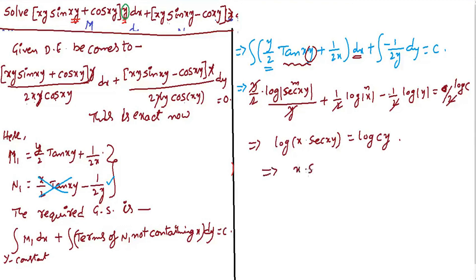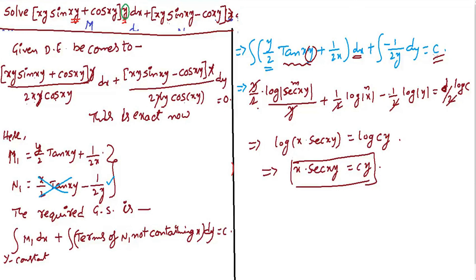Therefore the required general solution is x·sec(xy) = C1. Since all terms have 1/2 and log is involved in every term, we take 1/2·log C instead of C, as C is a parameter we can take anything. This completes the problem. In the next video, more problems on integrating factors will be covered.